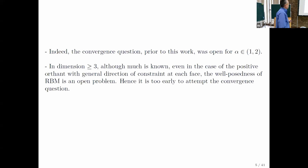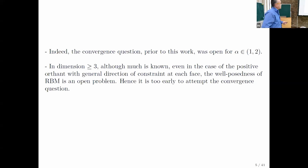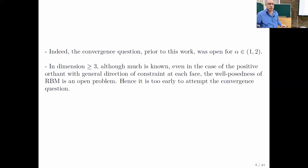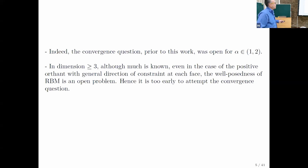There are two things that may surprise you. One is that there are cases where the problem was open — at least prior to this work — in particular when alpha is between one and two. The other thing is not about convergence but about the very existence of reflected Brownian motion in higher dimension. In general, the question is open. For concreteness, if we generalize to the positive orthant in higher dimension, the well-posedness of RBM is an open problem with general constraint directions on each face. The convergence question is too early to ask when you don't even have a candidate for the limit. This is why we work in dimension two.